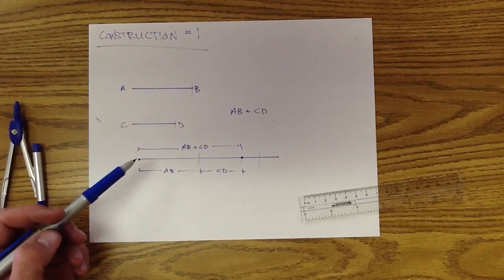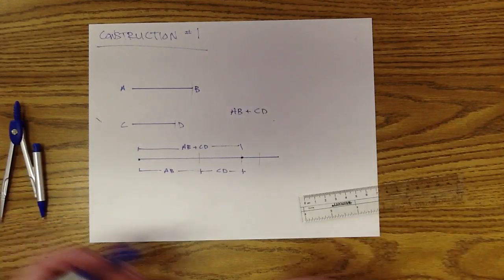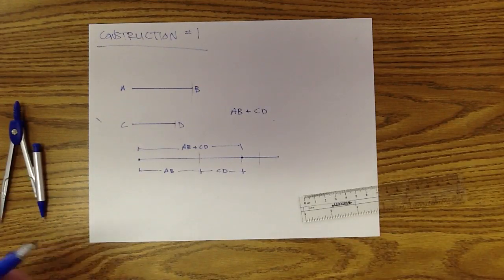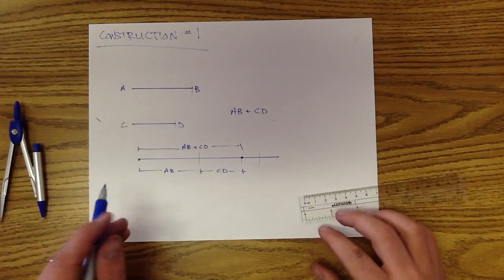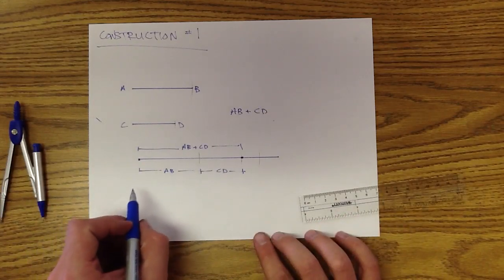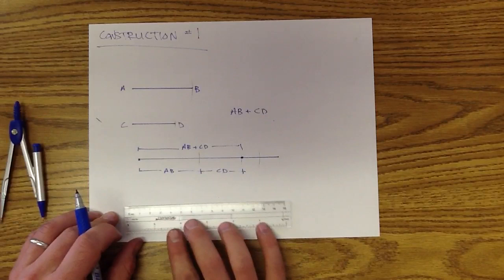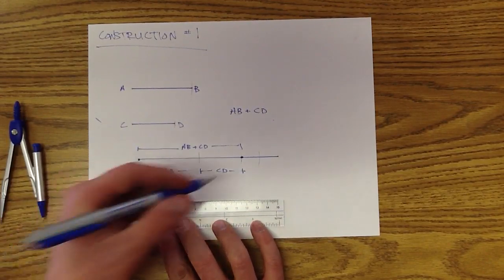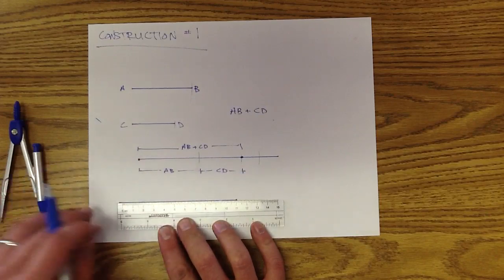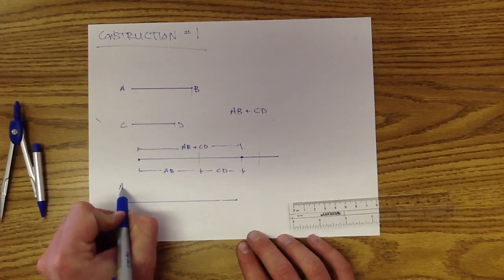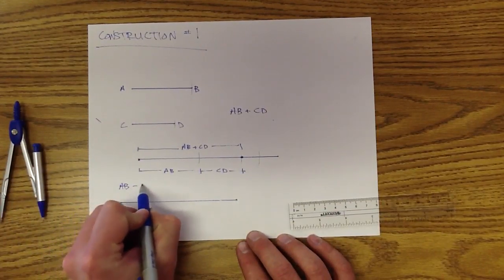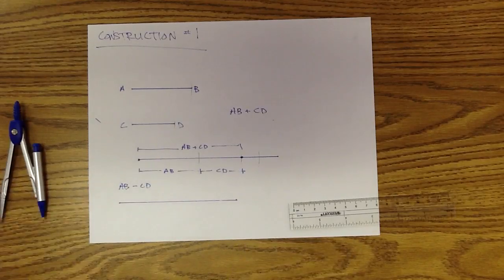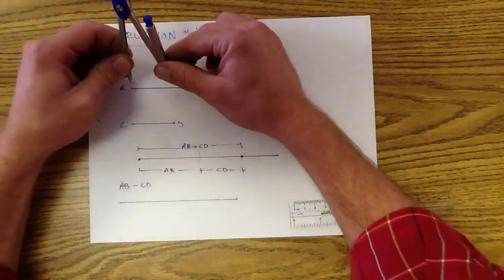Let's say we wanted to do AB minus CD. So instead of AB plus CD, we're doing AB minus CD. So let's just make some guideline here. We're going to try to do AB minus CD. First, you want to start out with figuring out what is AB.